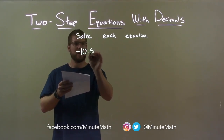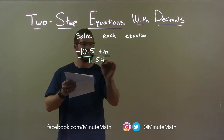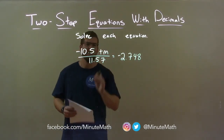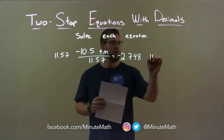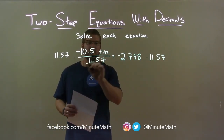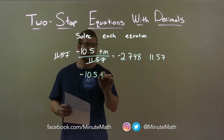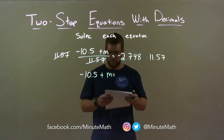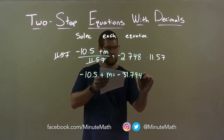Negative 10.5 plus M over 11.57 equals negative 2.748. First thing I want to do is multiply both sides by 11.57. Since we're dividing by 11.57, if I multiply both sides by 11.57 we eliminate that denominator, leaving me negative 10.5 plus M by itself on the left. On the right, negative 2.748 times 11.57 is negative 31.79436.